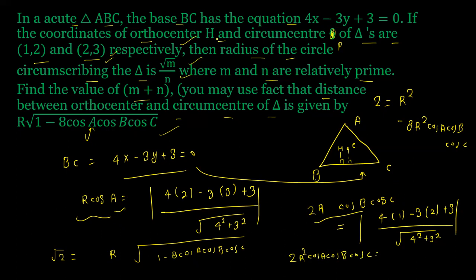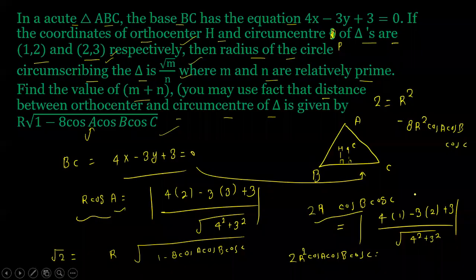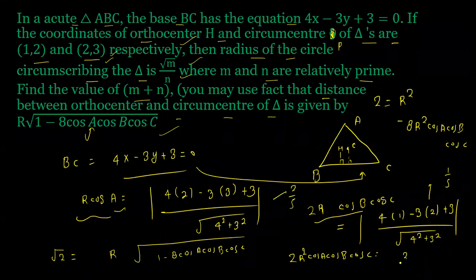If we check here, the distance is 1 by 5 and the distance is 2 by 5. Actually it will be 2 by 25. If you see this value, it will be 1 by 25.